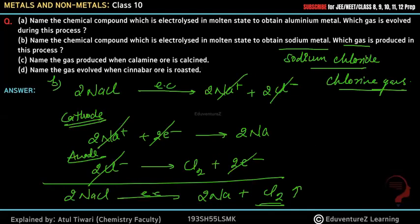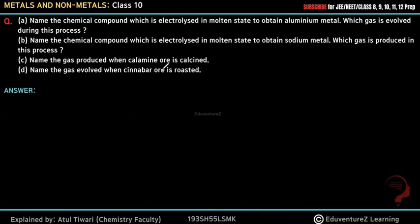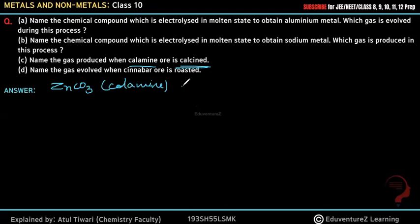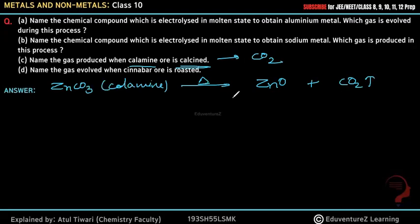Now question 3: Name the gas produced when calamine ore is calcinated. Calamine ore is ZnCO₃. Calcination means heating a carbonate ore in the absence of air at a temperature slightly below its melting point — it converts to the oxide and releases carbon dioxide gas. So when ZnCO₃ is heated in absence of air, it forms ZnO and releases CO₂. Answer: carbon dioxide (CO₂).